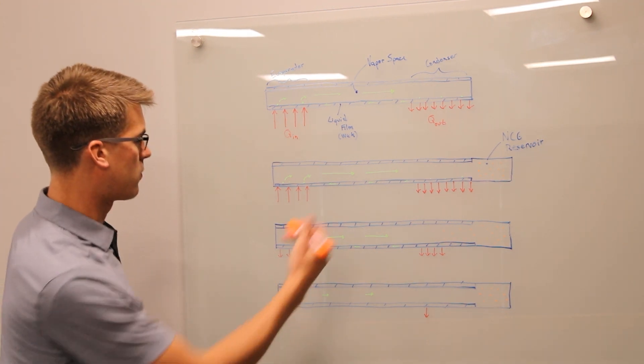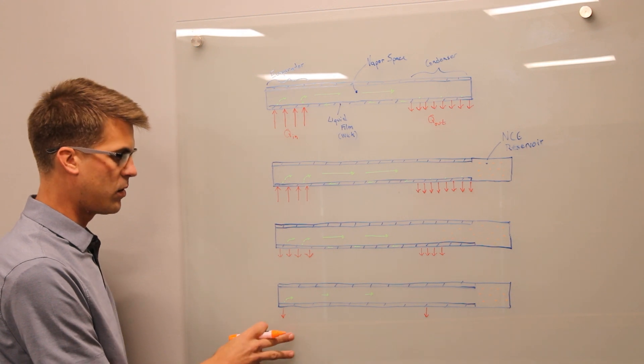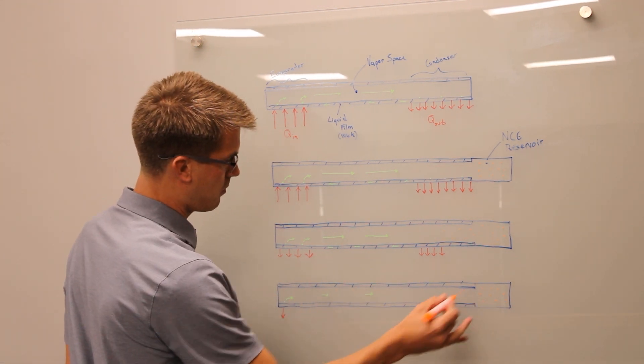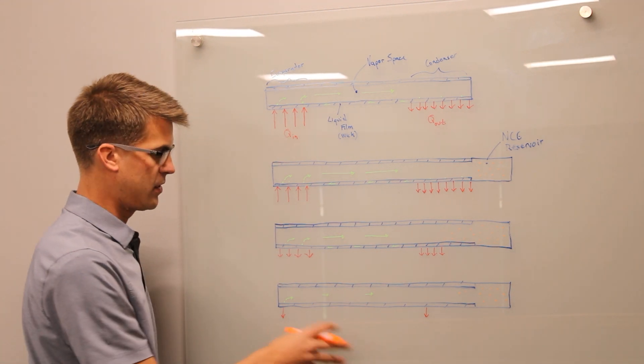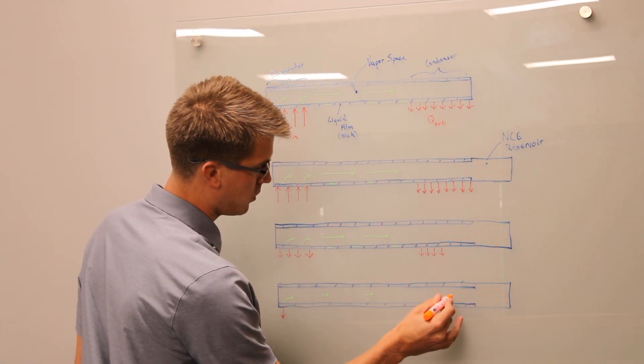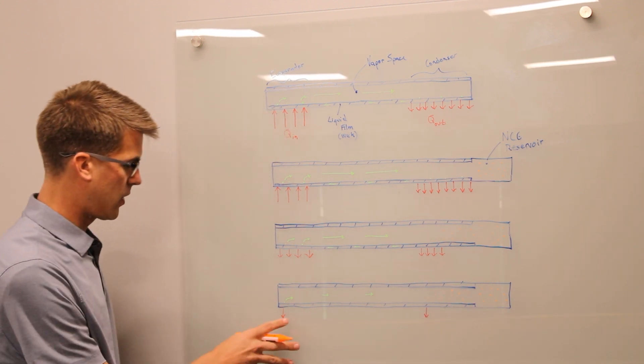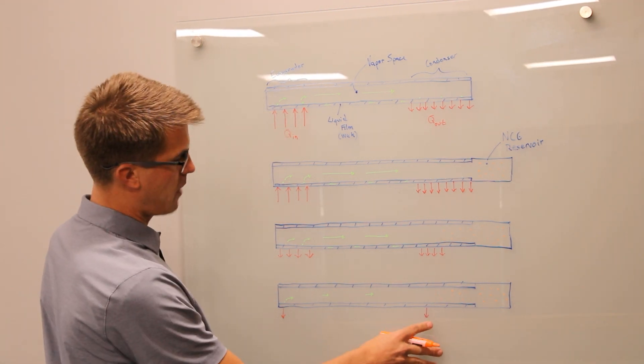If you were to further reduce that power to minimal or almost nothing, that gas again is allowed to expand further because of the decrease in pressure, because of the decrease in temperature and you will start to block even more of that condenser. And you can see we have a very low power input and a very low power dissipation.